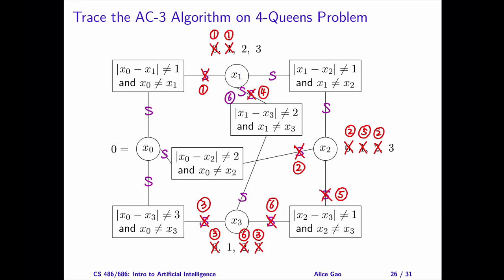Step 7. Let's remove the arc between x1 and x2, where x2 is the primary variable. Is this arc consistent? If x2 is 3, no value of x1 satisfies both constraints: x1 equals 2 violates the diagonal constraint, and x1 equals 3 violates the row constraint. Therefore, this arc is not consistent, and we need to remove 3 from the domain of x2. The domain of x2 is empty. The AC3 algorithm terminates, and we can conclude that no solution exists for this problem.